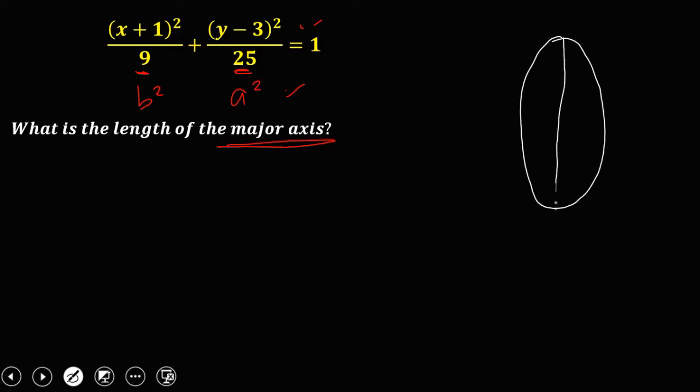Okay, so this is the center, the focus, and the vertex. This one, the other focus, and the vertex. And these points are the endpoints of the minor axis.